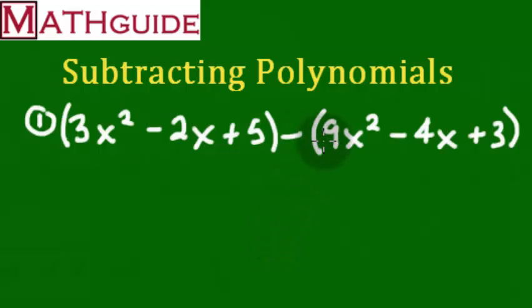So the opposite of 9 is negative 9. The opposite of negative 4x is positive 4x. And then the opposite of a positive 3 is a negative 3. So once we've changed everything to the opposite, we're now going to consider this like an addition problem. So that's what we're doing, changing from subtraction to addition.